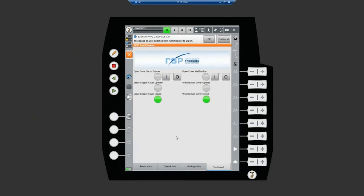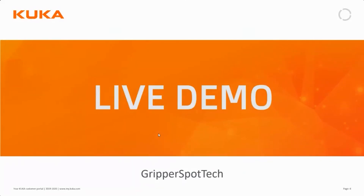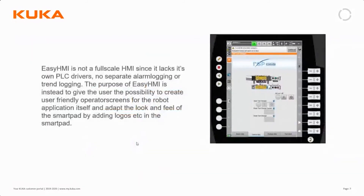It's equally important to say what Easy HMI is not. Easy HMI is a tool to visualize what happens in the robot controller right now. It is not a full-scale HMI operator panel, because it lacks PLC drivers to external PLCs or external field buses, and there is no dedicated alarm logging or tag logging inside it. Instead, its purpose is to create ease-of-use screens for inexperienced operators, or to change the look and feel by adding logos and colors to make a more customized screen.